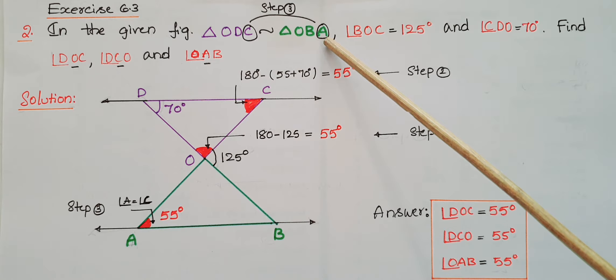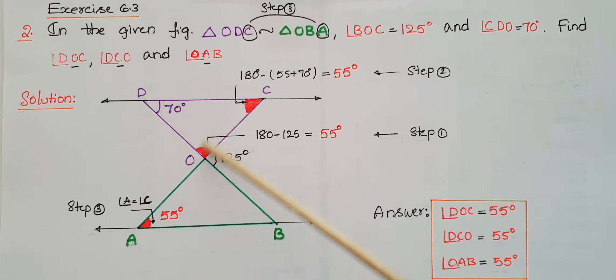These two triangles are similar, and angle BOC is equal to 125 degrees. Angle CDO is 70 degrees. Here we have to find angle DOC, angle DCO, and angle OAB.